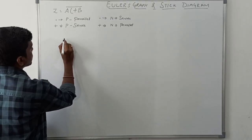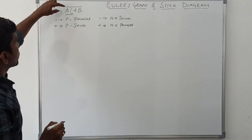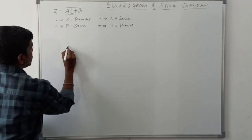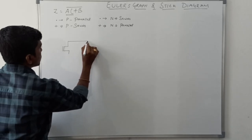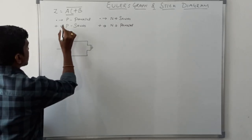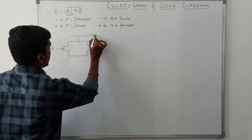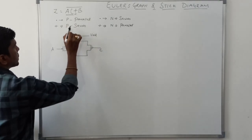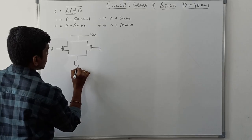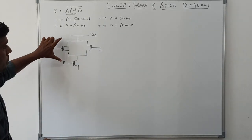Now I am going to draw the CMOS logic circuit for the corresponding boolean expression. The first part of the equation involves a dot operation, so the PMOS transistors are connected in parallel. These two transistors are connected in parallel — the input of the first transistor is A, and this transistor is C. It is connected to VDD. The next operator is plus, which means series, so the B transistor is connected in series to this network.